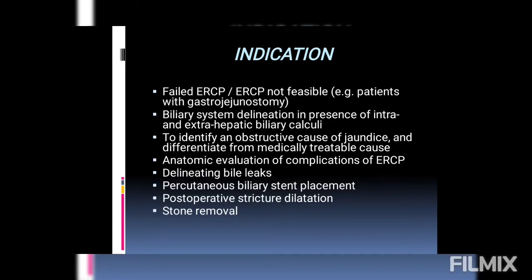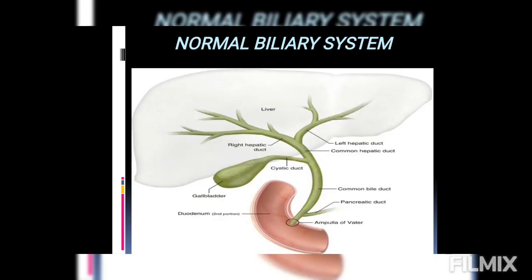Now here we have the indications. The first indication is failure of ERCP, or when ERCP is not feasible. ERCP stands for endoscopic retrograde cholangiopancreatography. In this procedure, we access via the ampulla of Vater — the common opening of the bile and pancreatic duct — which we can see in this picture.